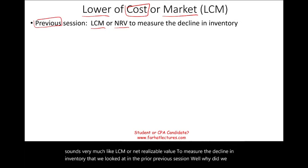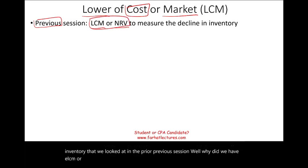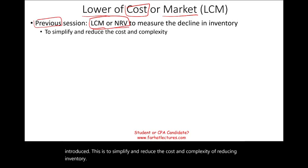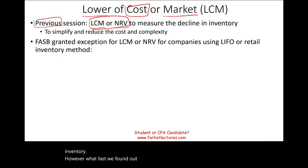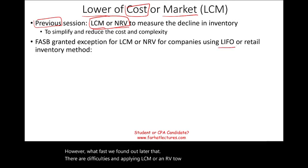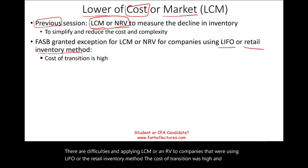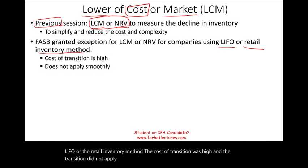Why did we have LCM or NRV the previous session? The reason why FASB introduced this is to simplify and reduce the cost and complexity of reducing inventory. However, what FASB found out later is that there are difficulties in applying LCM or NRV to companies that were using LIFO or the retail inventory method. The cost of transition was high and the transition did not apply as smoothly as other methods such as FIFO or the average method.